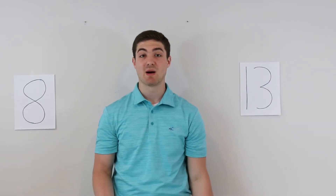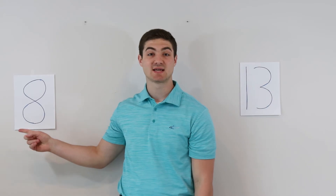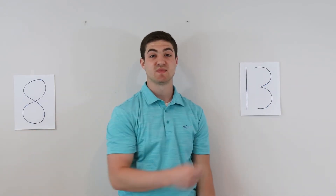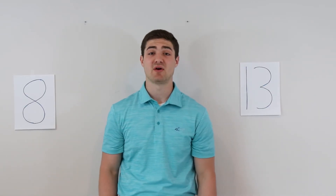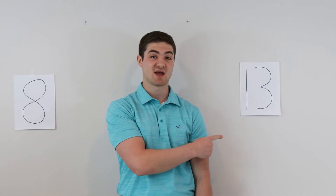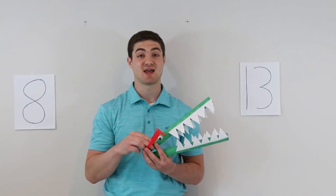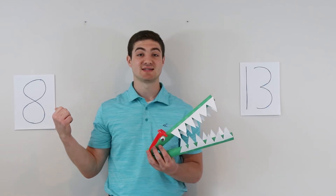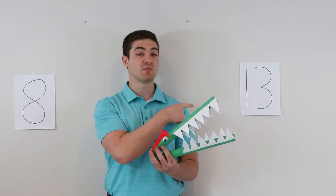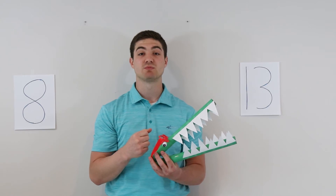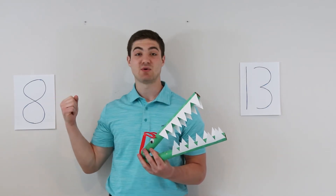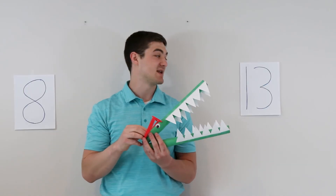So now we have two new numbers up on the wall. We have 8 and we have 13. Remember, Danny only likes eating the bigger number. So now with breakfast, we have to figure out: does Danny want to eat 8 pancakes, or do you think Danny would eat 13 pancakes? So Danny will eat 13. He'd much rather have 13 pancakes. So we would start reading on our left. And since 8 is smaller than 13, remember when we have the word smaller, we say less than. So we would say 8 is less than 13.